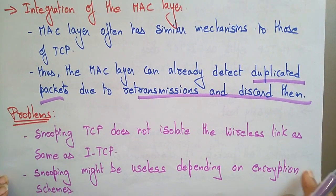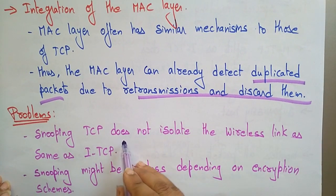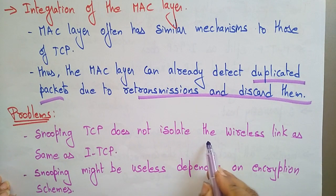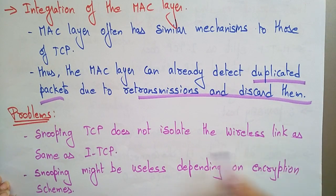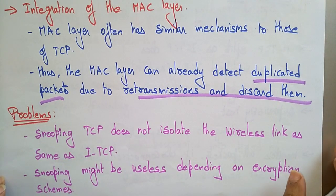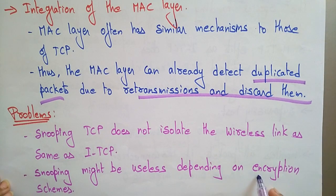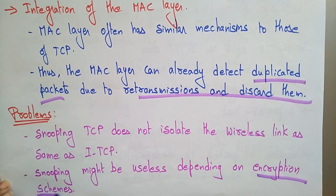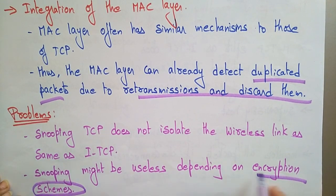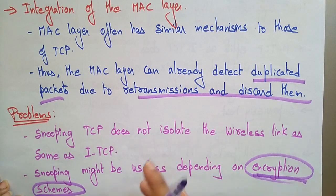Now let's look at the problems with Snooping TCP. First, snooping TCP does not isolate the wireless link in the same way as indirect TCP. Second, snooping might be useless depending on encryption — in the case of encryption, the snooping mechanism may not be able to inspect packets and thus becomes useless.